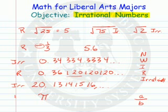Pi — irrational number. Even though we think of it as being 22 over 7 sometimes, that is only an approximation. So it is an irrational number.